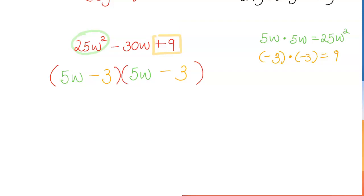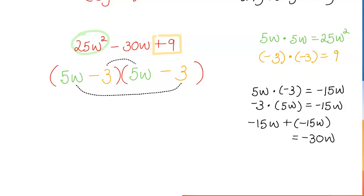So what I now need to check is the middle terms. I will multiply the inner, these two, and the outer. And let's see. If I multiply those two, 5w times negative 3 is negative 15w. And if I'm looking at the two inner terms, negative 3 times 5w, isn't that negative 15w? And if I add negative 15w plus another negative 15w, they will add up to negative 30w, which matches that term right there. So I think we got it.